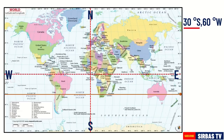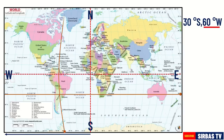The next step is to find the location of the longitude. Again, we need to specify the hemisphere it is located. The given longitude is 60 degrees west. Therefore, we are going to locate it on the left side of the prime meridian. Next, we need to determine the value of the longitude. In this case, it is 60 degrees. Therefore, the location of the longitude is at this point. From this point, we will draw a vertical line.